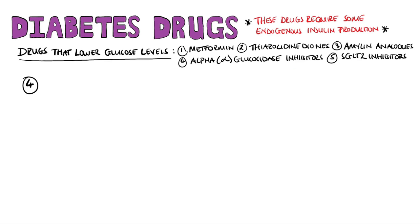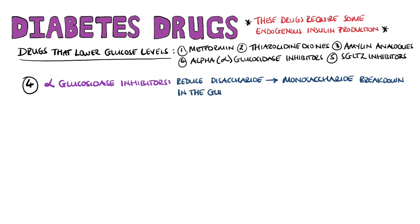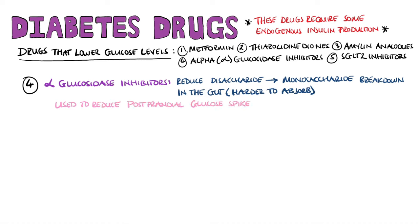Alpha-glucosidase inhibitors inhibit the enzyme alpha-glucosidase, which is responsible for breaking disaccharides into monosaccharides in the gut. By inhibiting this enzyme, sugars are not well absorbed, helping to reduce postprandial glucose spikes by up to 50%. Side effects are related to the undigested carbohydrates: diarrhea, abdominal pain, and flatulence. An example is acarbose.